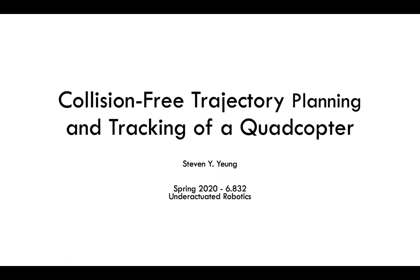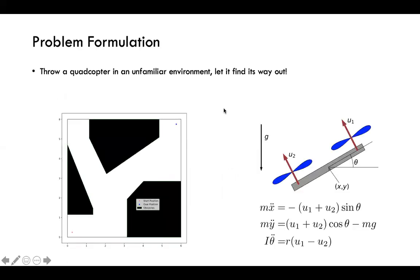My final project topic is collision-free trajectory planning and tracking of a quadcopter. The problem formulation is set up as below. I want to throw a quadcopter in an unfamiliar environment, and then I want to generate the trajectory and optimize that trajectory so that the quadcopter can get from the initial state to the final state.